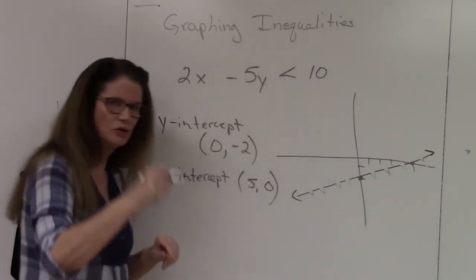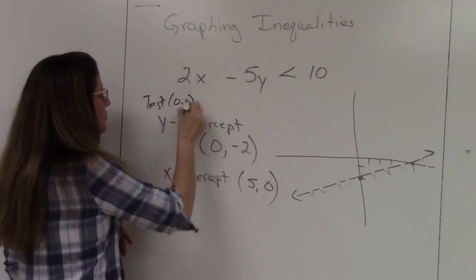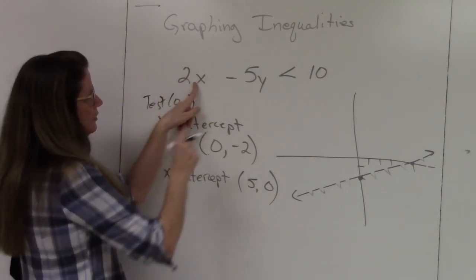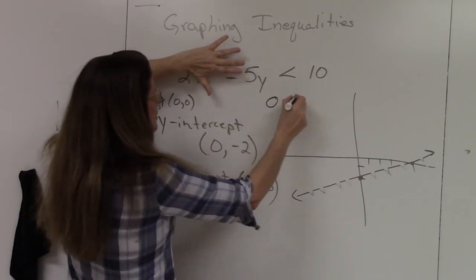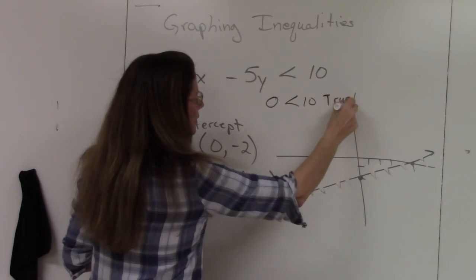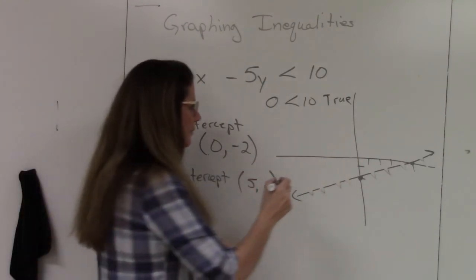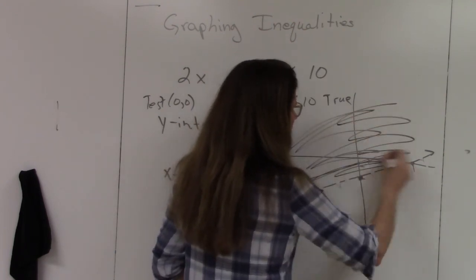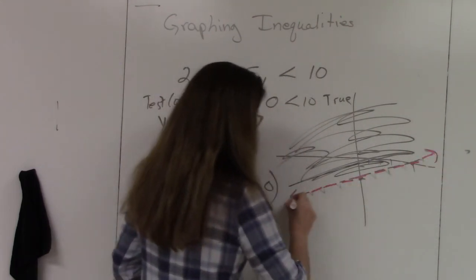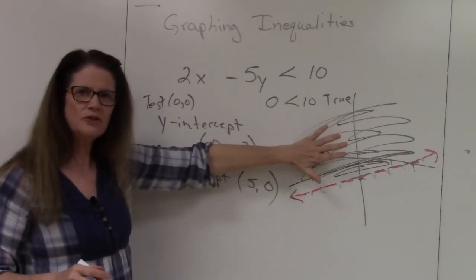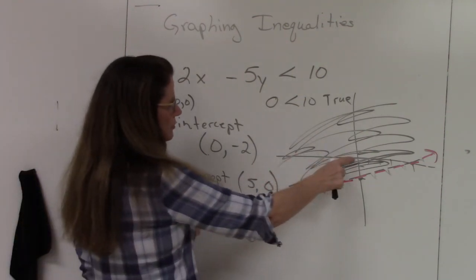Now use the test point (0, 0). Plug 0 in for x and 0 in for y — that's why we use (0, 0), it makes everything easy. You get 0 is less than 10, which is a true statement. Since the test point (0, 0) is part of the solution, shade in everything that includes (0, 0) — the region on that side of the dotted line.